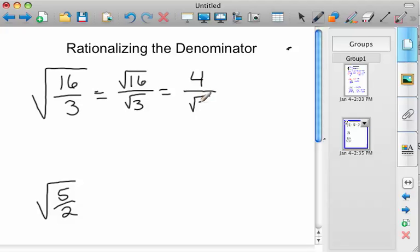The problem we have is the root 3 on the bottom. So that is an irrational number. It's 1.732 dot, dot, dot. So it keeps going on and on forever.